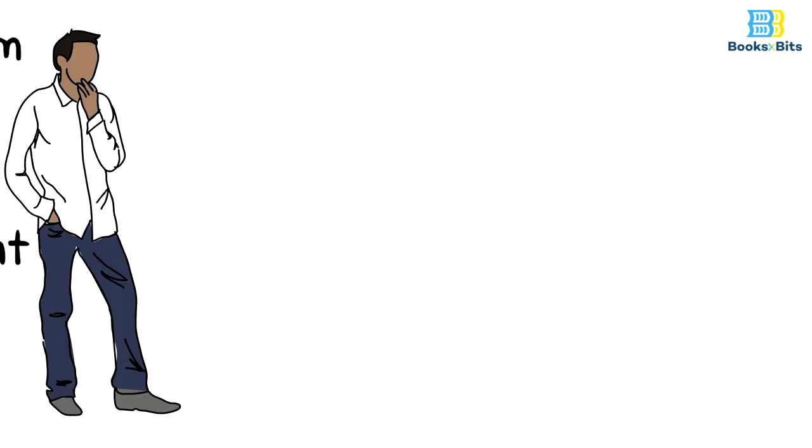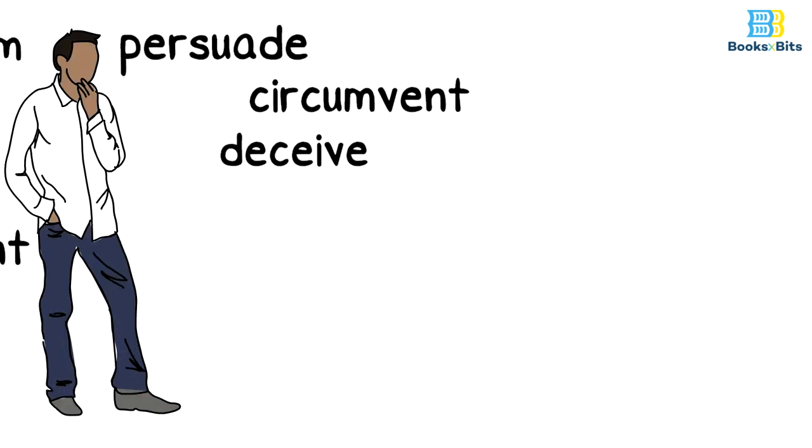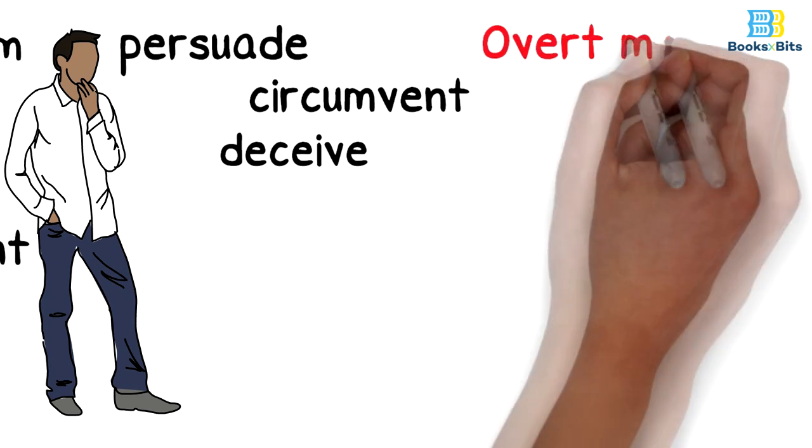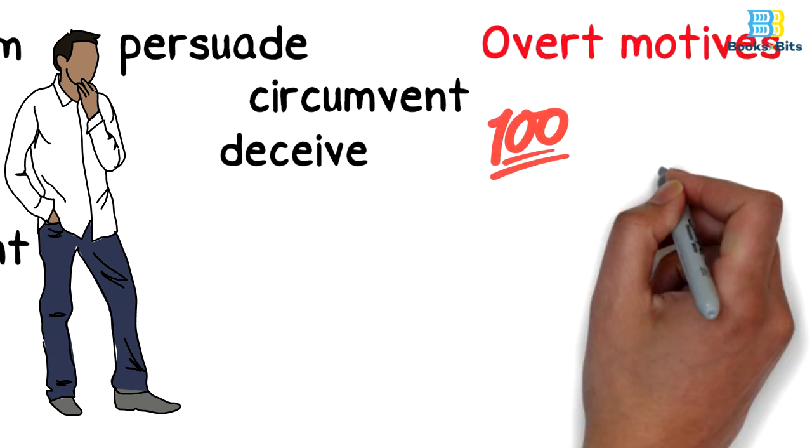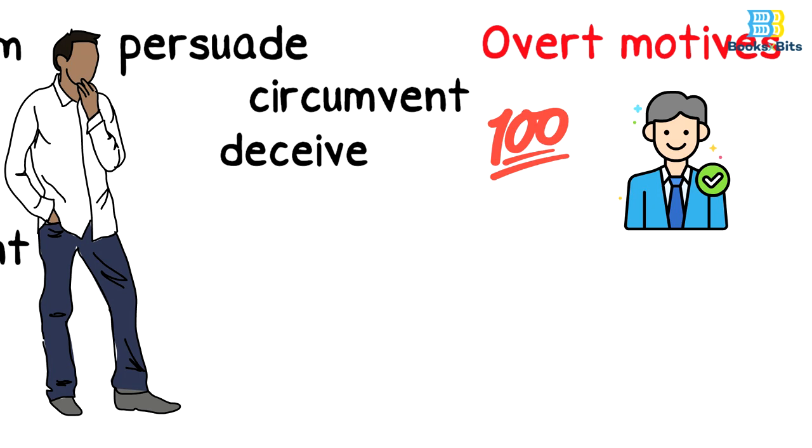Various manipulators use different methods in order to persuade, circumvent, and deceive to achieve their personal goals. But we must detect and know the motives of these people to proceed in their manipulative projects. Overt motives are the obvious motives used by sellers and brokers, for example.